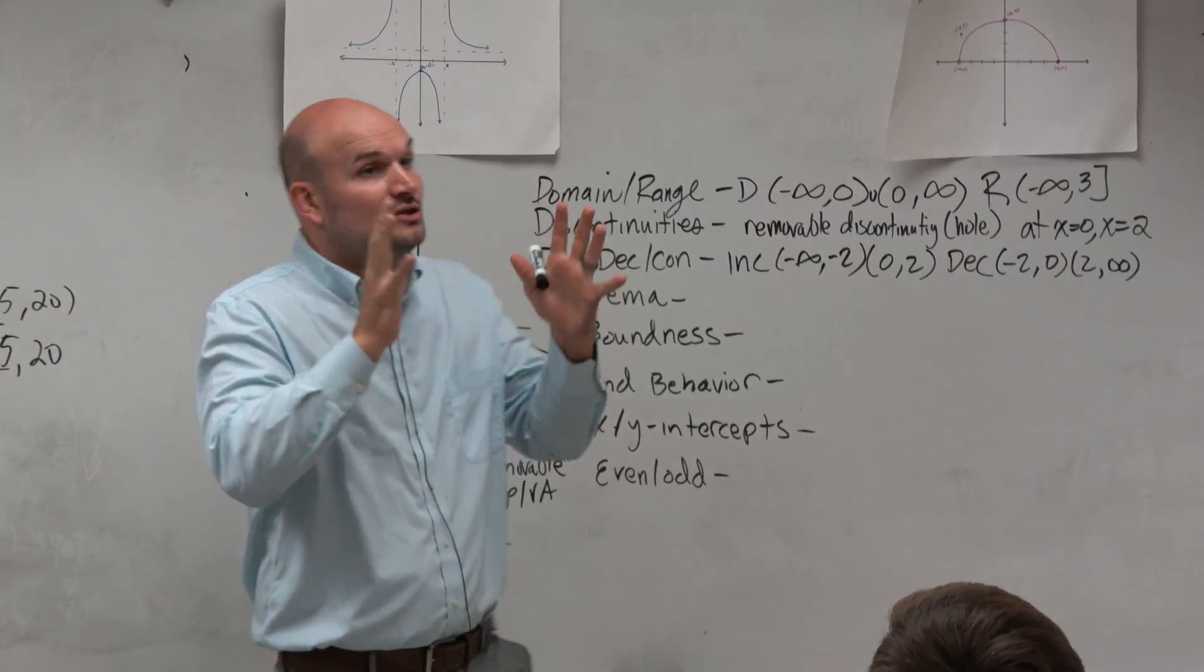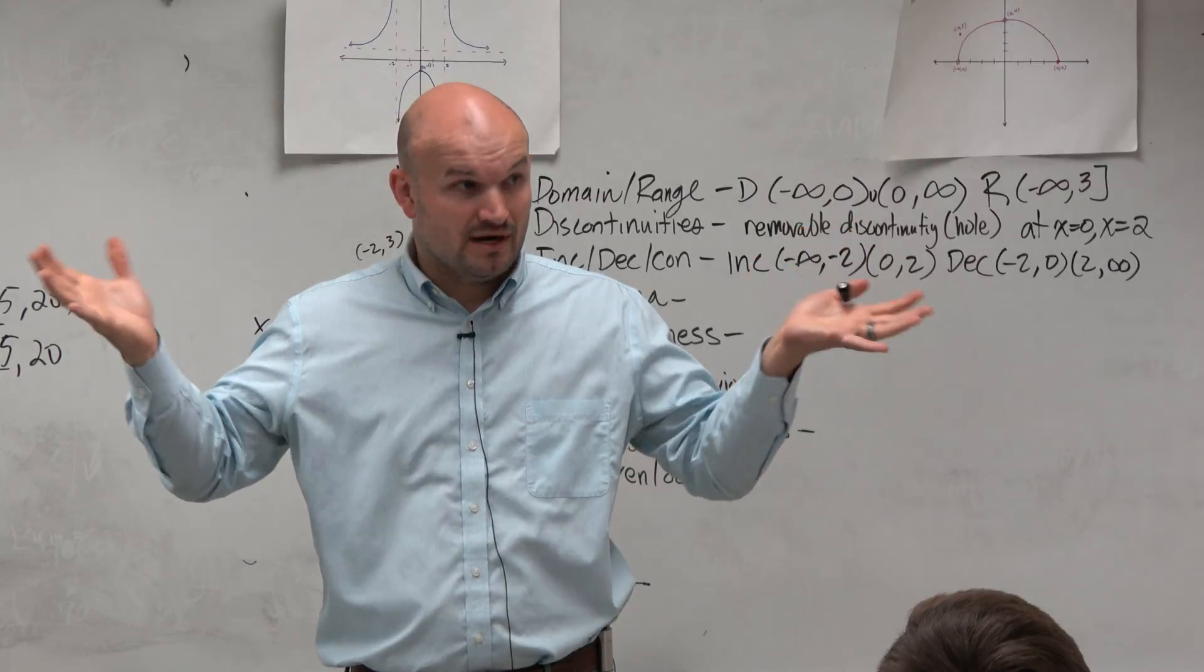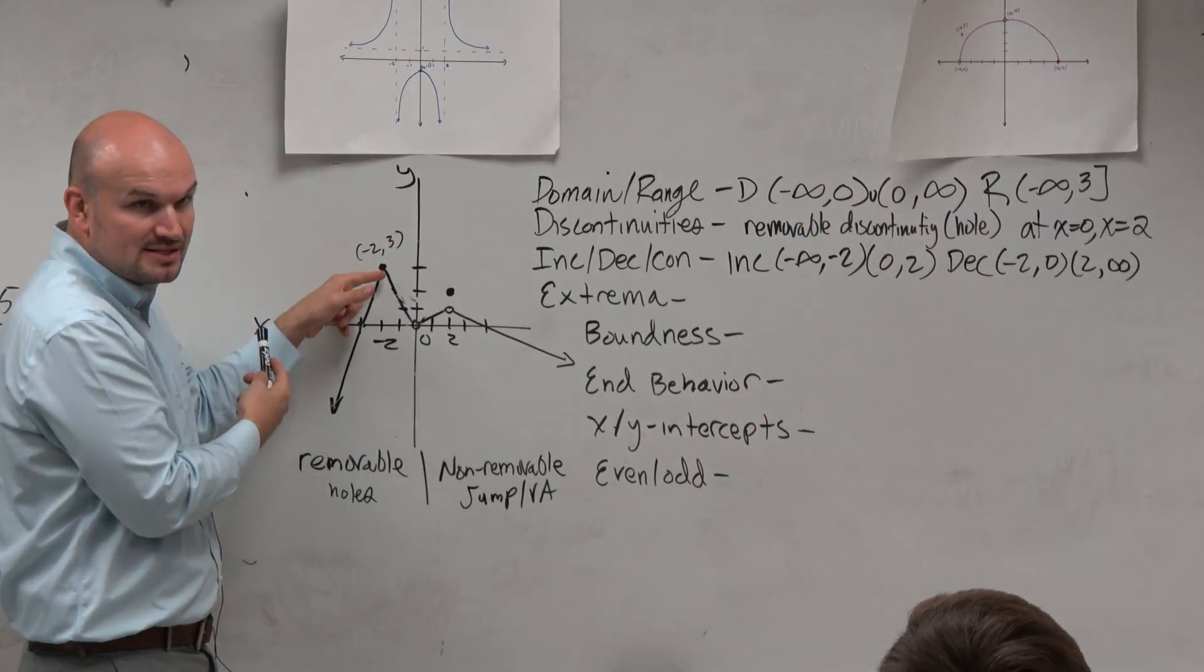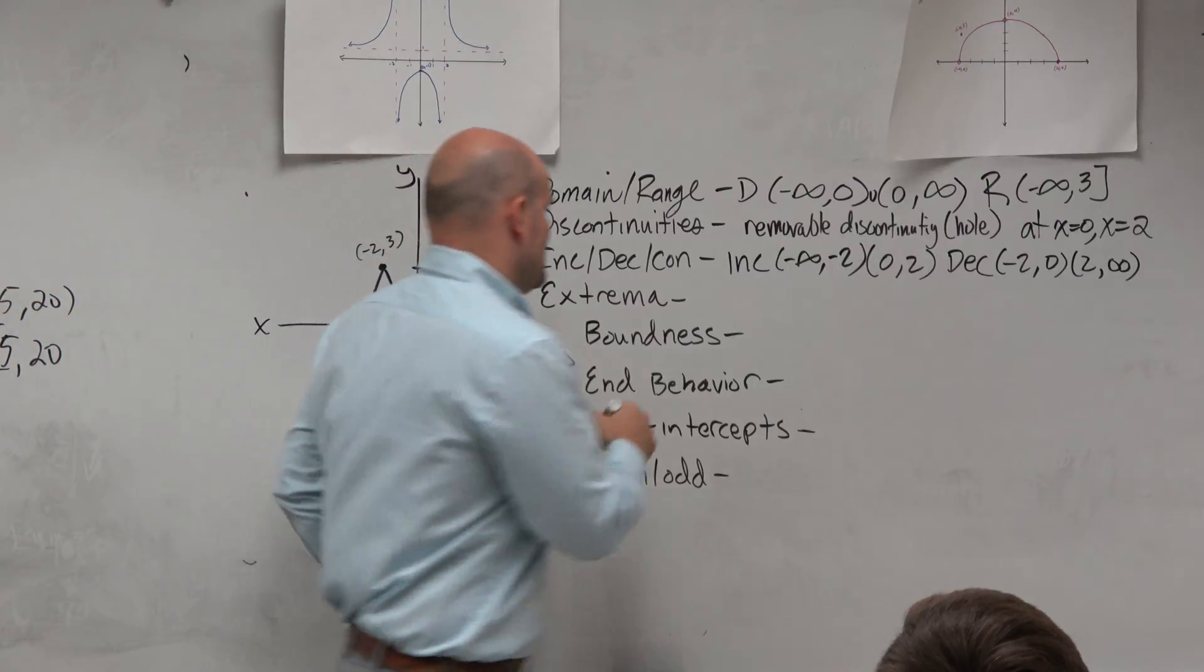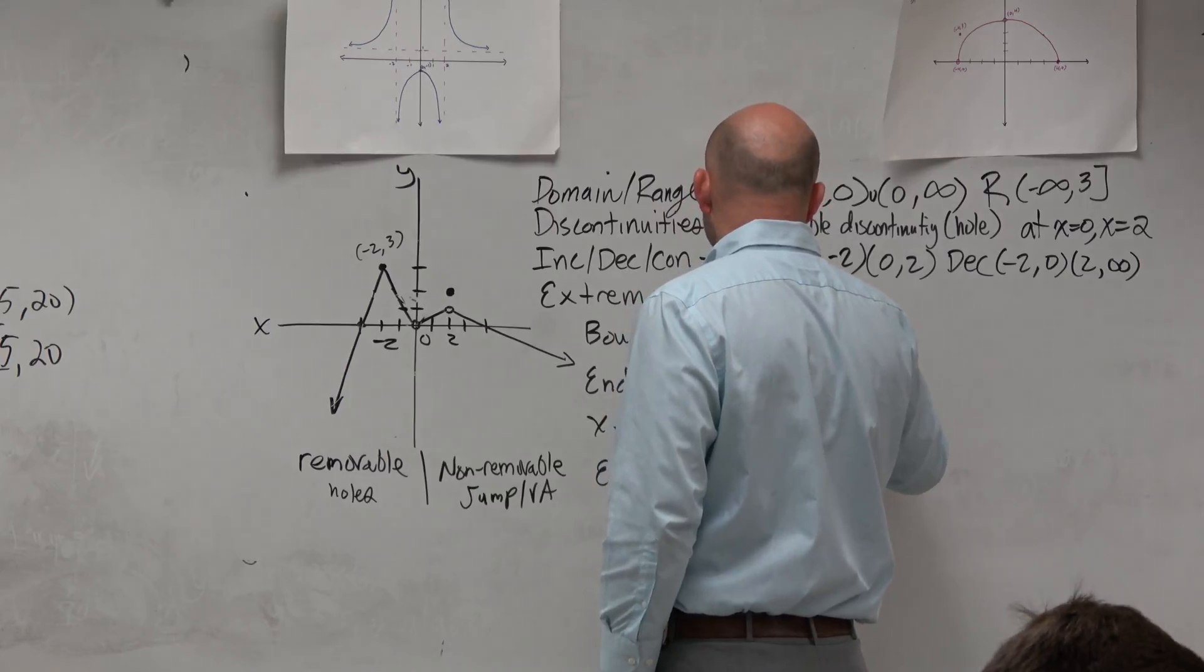And is that the absolute maximum value? Is that the highest the graph goes? Right? There's no reason for us to believe right now that the graph is going to go any higher than that point. Correct? So we can say that is an extrema. That is the absolute max.